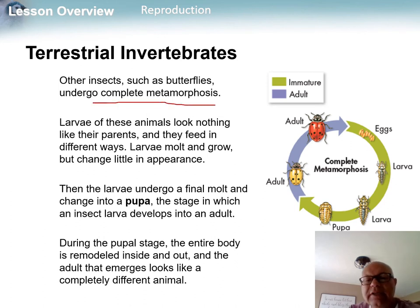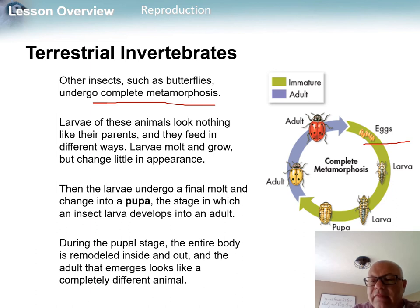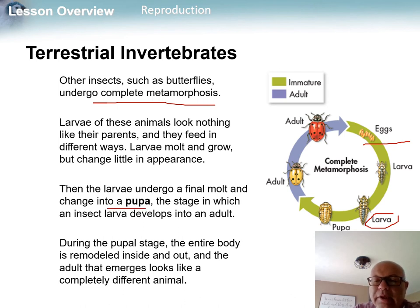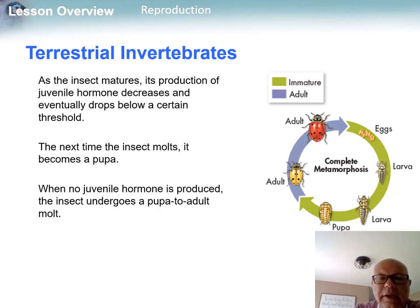In other species, such as many insects — beetles, butterflies, and moths — it's complete metamorphosis. The stages are: egg, then larva, then pupa after the final molt (this is where you'd see a cocoon or chrysalis), and then the adult. This entire process is controlled by hormones.